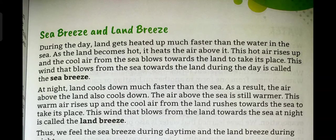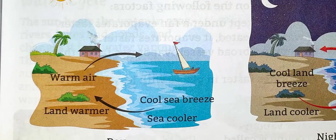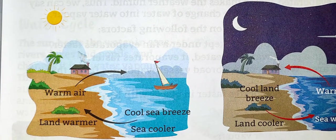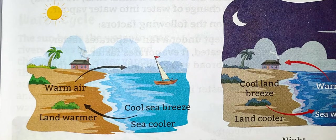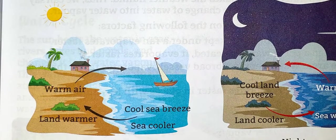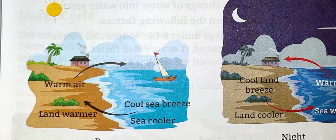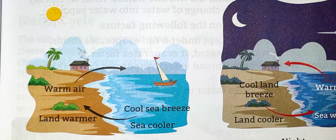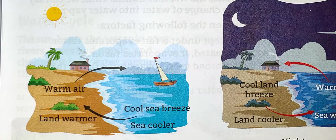Let us learn about sea breeze. Look at this picture — this is the seashore and it is daytime. The land is warmer than the water, so the air over the land is warmer than the air over the sea. The warm air over the land rises up, and cool sea air moves in to take its place. That is called sea breeze.